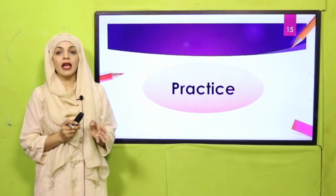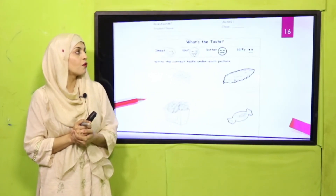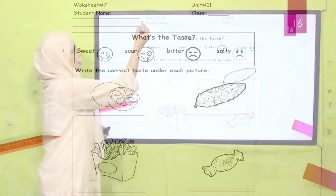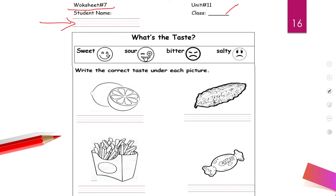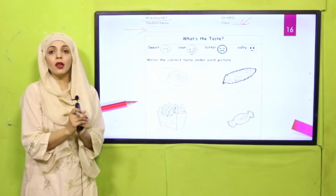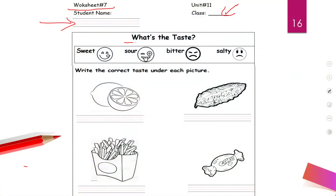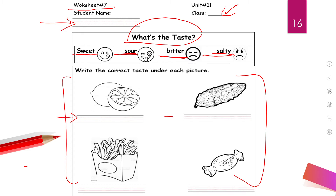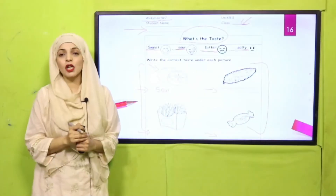Your practice for today is a worksheet — worksheet number 7. Your teacher will provide it in printed form. Write down your name and your class. The worksheet shows the four tastes: sweet, sour, bitter, and salty, with pictures. You have to write the correct taste under each picture. Let me do the first one for you: the first picture is of a lemon, and lemon has a sour taste. Now pause the video and do the rest.